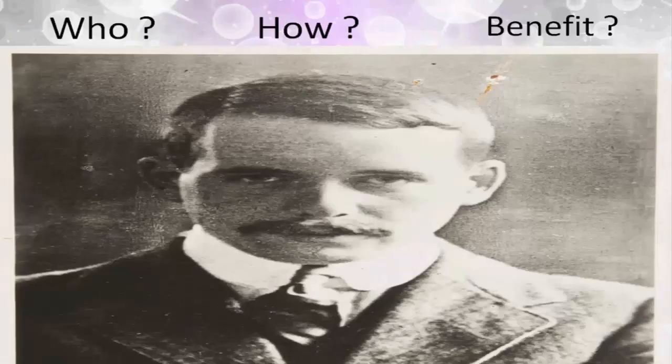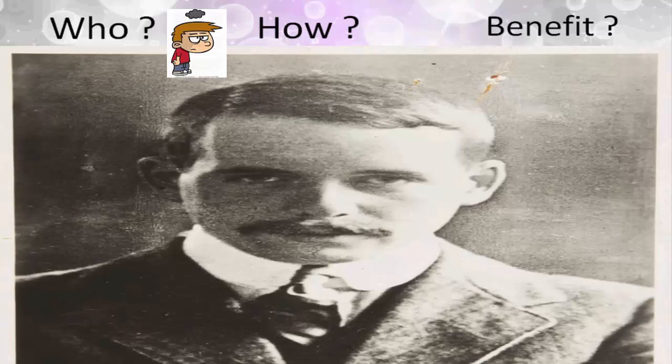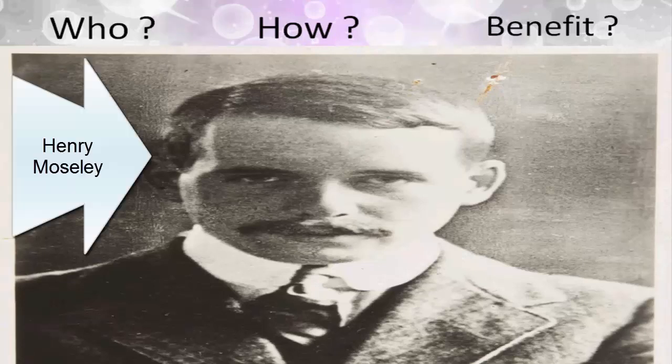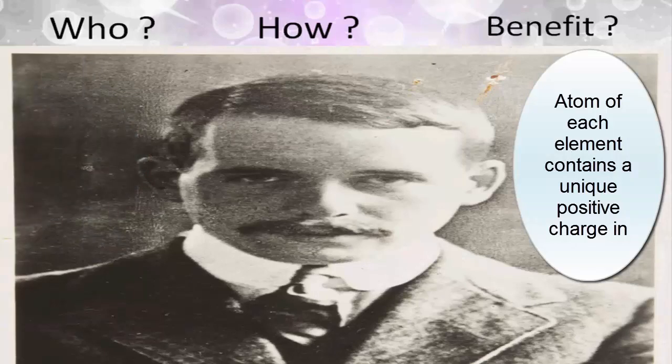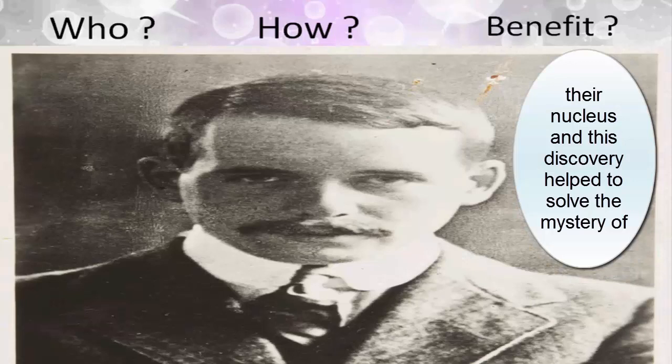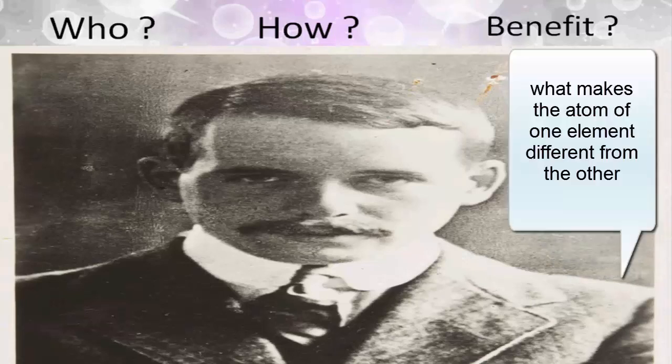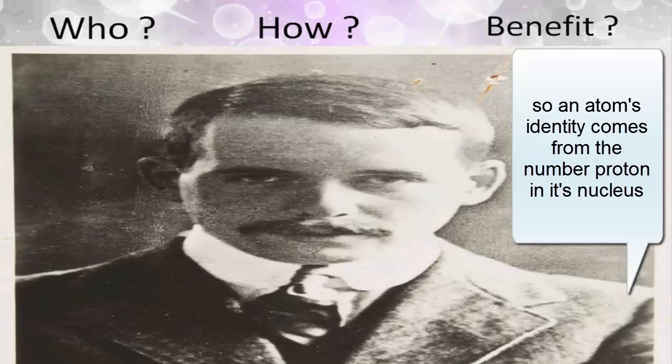So who discovered the atomic number? Henry Moseley, he was a British scientist. He found that atoms of each element contain a unique positive charge in the nucleus. And this discovery helped to solve the mystery of what makes the atom of one element different from those of the other. So an atom's identity comes from the number of protons in its nucleus.